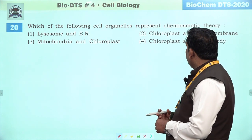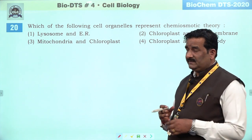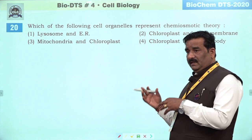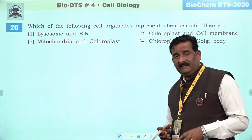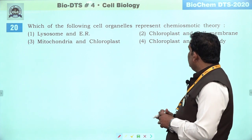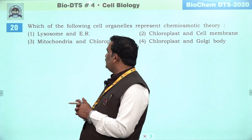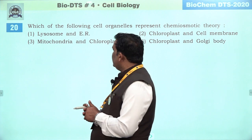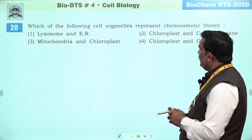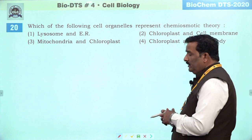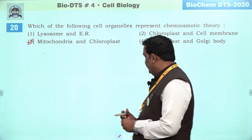Next question: which of the following cell organelles represent chemiosmotic theory? Bahut achha question hai — kai baar banta hai. Chemiosmotic theory relates with ATP formation. ATP formation occurs inside the mitochondria and chloroplast. Humare paas option ke taur par jo third hai, usmein mitochondria bhi hai chloroplast bhi hai, isliye yeh right banta hai. ER, cell membrane, Golgi body — ATP ka formation nahi karaate. Third is the right answer.